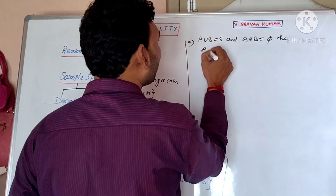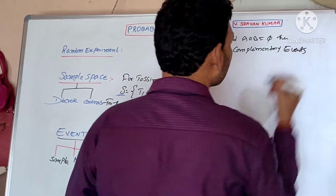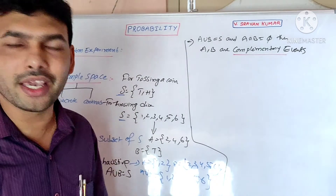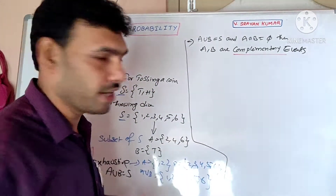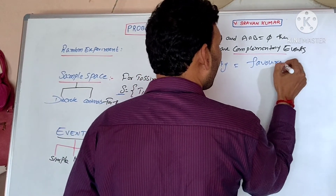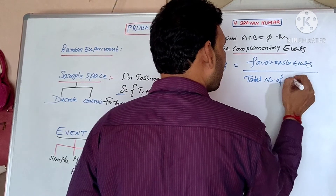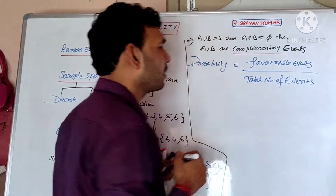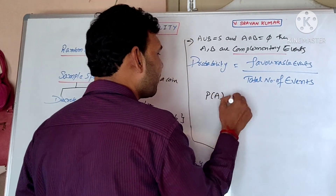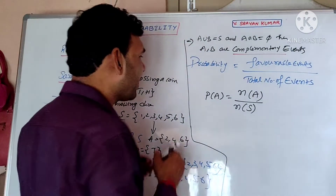Now let's discuss the probability definition. Probability is defined as the number of favorable outcomes divided by the total number of outcomes. So, probability of event A equals the number of elements in A divided by the number of elements in S.